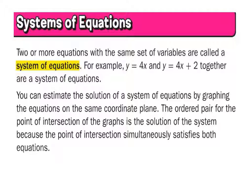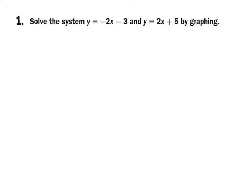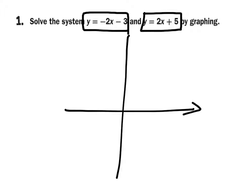But if you're not knowing how to graph, then that's what you need to worry about. For example, y equals 4x and y equals 4x plus 2 create a system of equations — the 's' makes it plural. This graphing stuff makes solving this so easy. Let's look at this example. Let's say this is our system of equations: y equals negative 2x minus 3 and y equals 2x plus 5. First thing we need to do is create our graph.